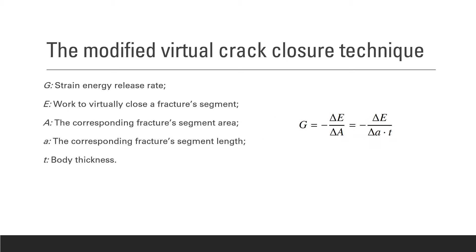Alternatively, the strain energy release rate can also be written as the quotient between the necessary work to virtually close a segment of the crack, denoted by the letter E, and the corresponding crack surface, denoted by the letter A. So G can be written as shown here.